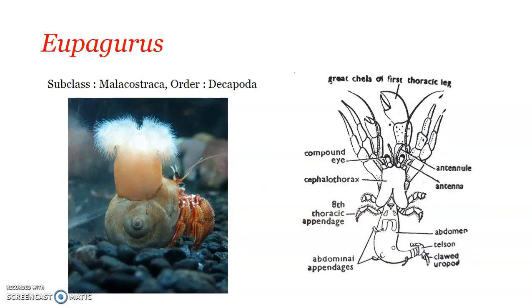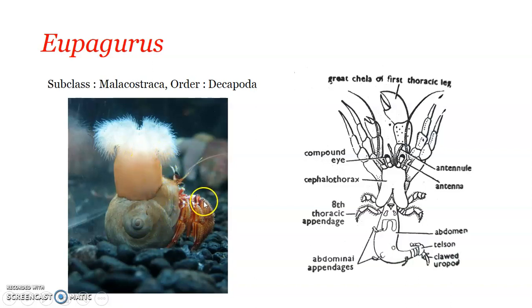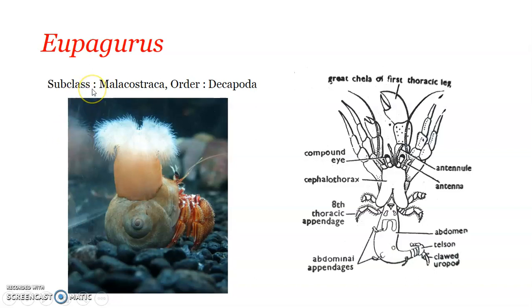The next organism is Eupagurus, which is the hermit crab. In the figure you can see representation of three different organisms from three different phyla - the arthropod (hermit crab), the mollusk (gastropod shell), and the sea anemone. Eupagurus, commonly referred to as hermit crabs, come under subclass Malacostraca and order Decapoda. Malacostraca includes mostly crustaceans found in fresh water and sea water, and members usually have an eight-segmented thorax while the abdomen comprises six, rarely seven, segments.